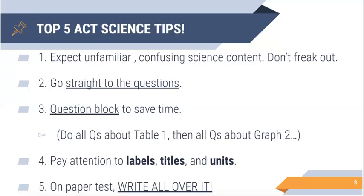Tip number four: pay attention to labels, titles, and units. Those will help you find things quickly — they are your friends. And then the last tip, number five: it is a paper test when you take the real ACT science, so make sure you write all over it.